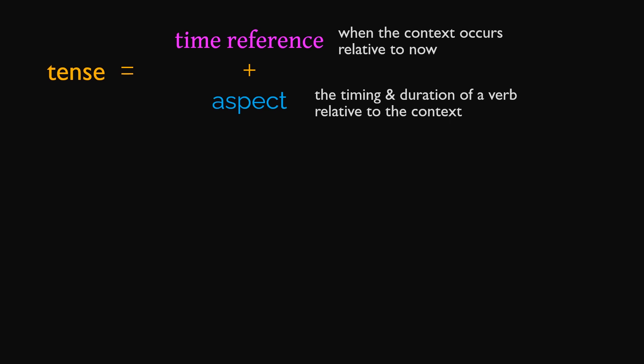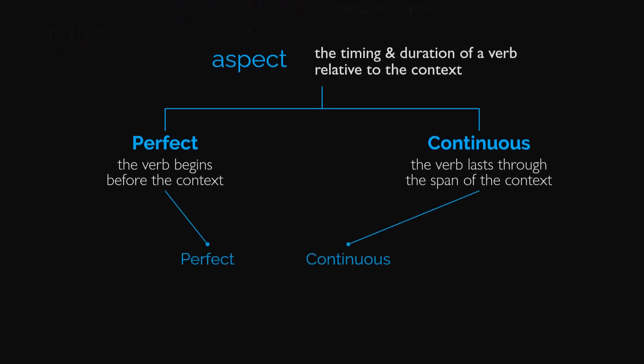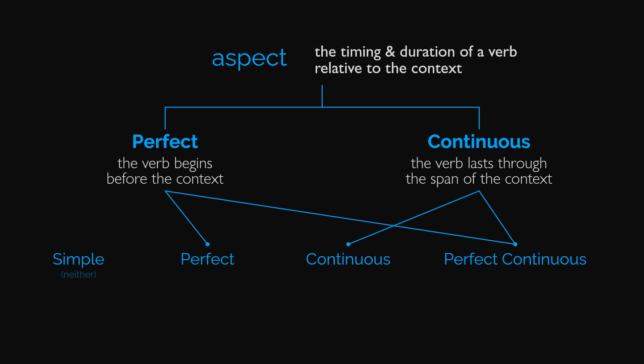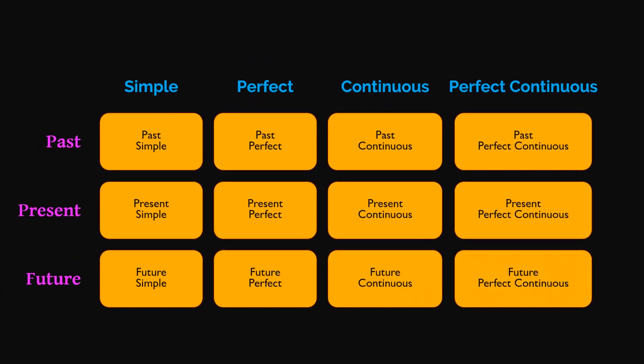In summary, aspect is the timing and duration of a verb relative to the context. The two marked aspects are perfect and continuous. We can include one, both, or neither aspect with one of the three time references to form the standard English tenses.